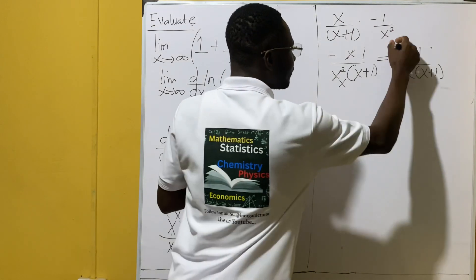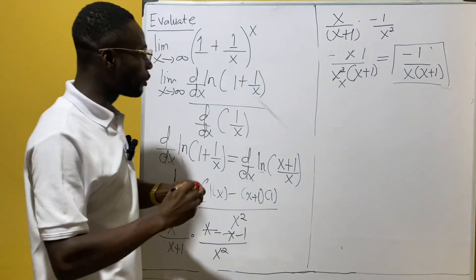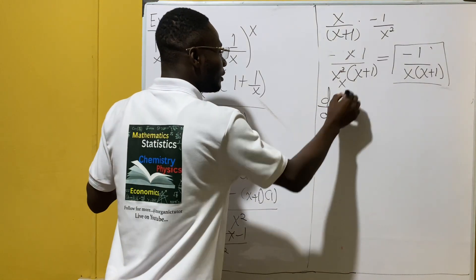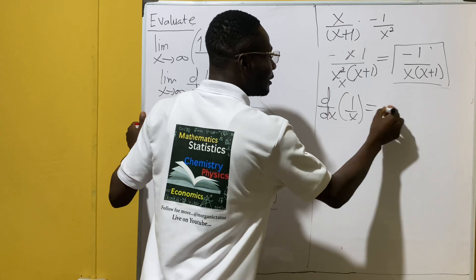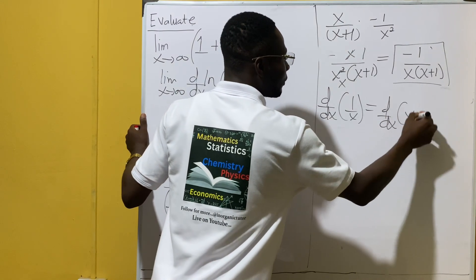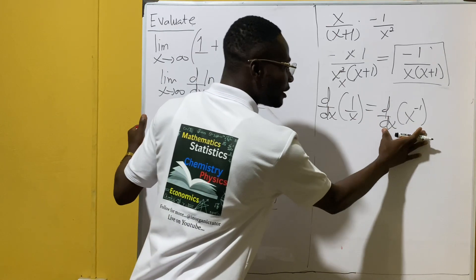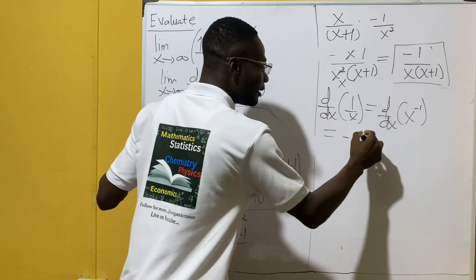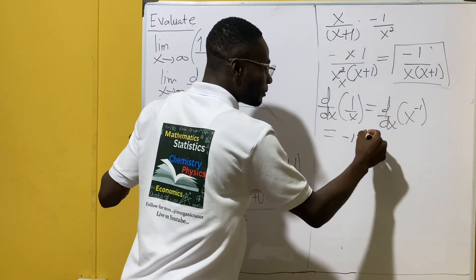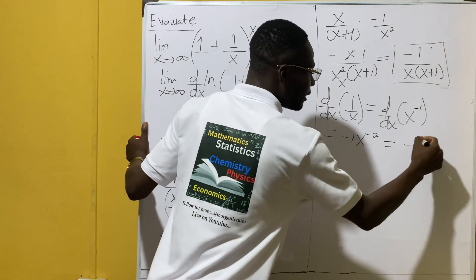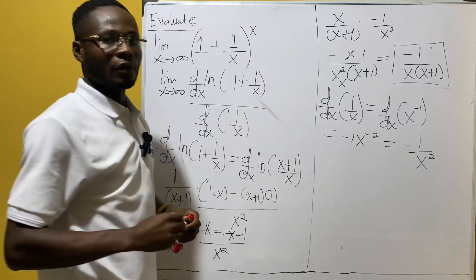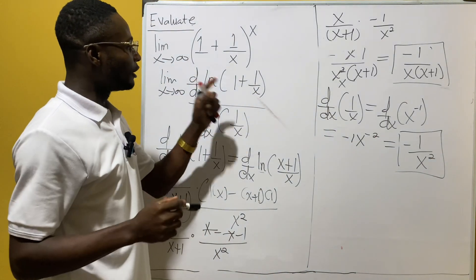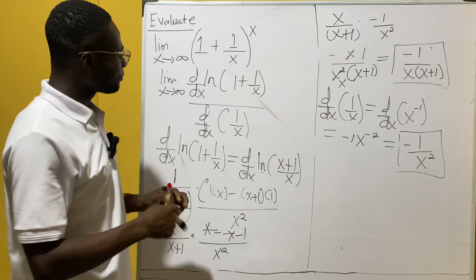Now we differentiate the denominator as well. The denominator is 1/x, which is the same as x to the negative one. Differentiating using the power rule: drop the exponent, so we get negative 1, then subtract one from the exponent to get negative 2. So the derivative of the denominator is negative 1 over x squared.